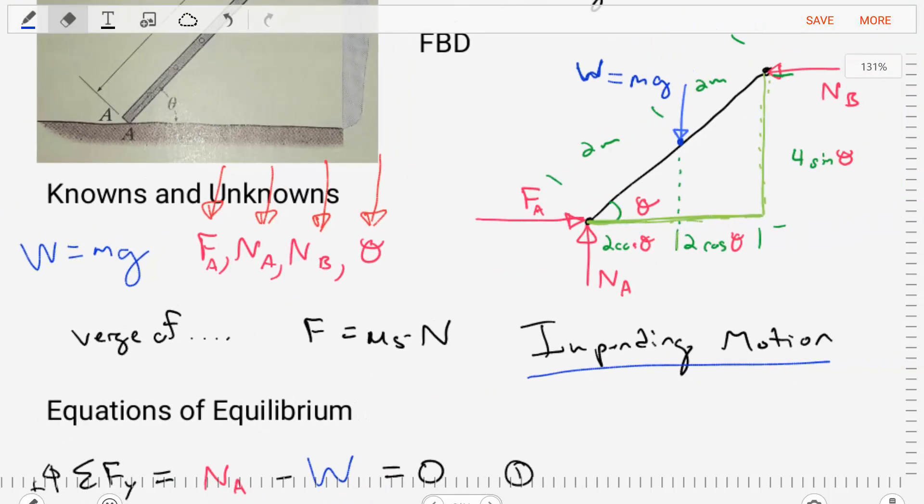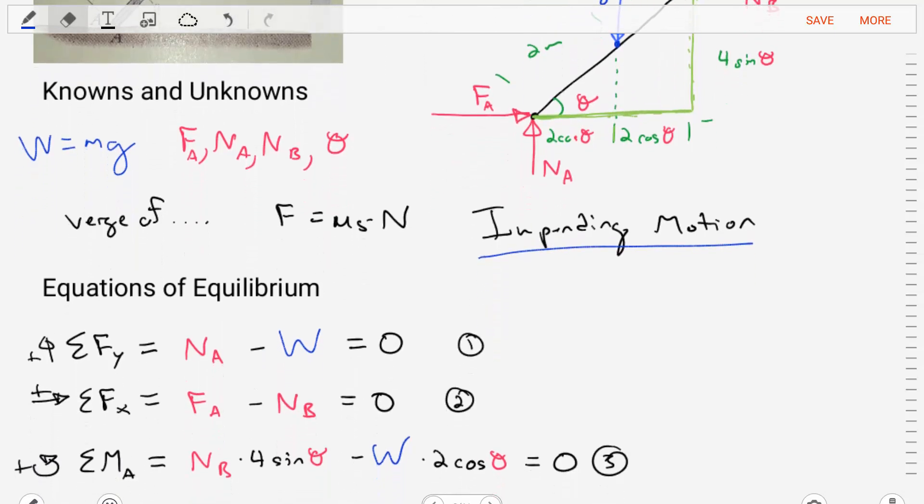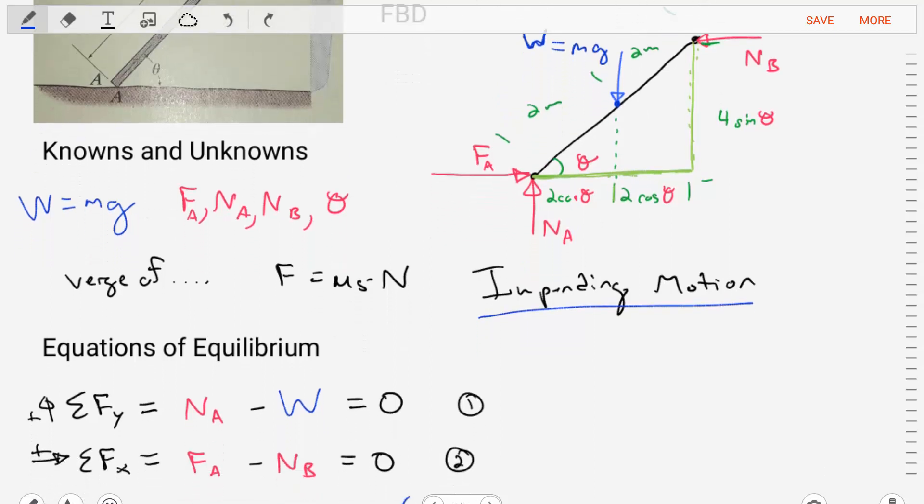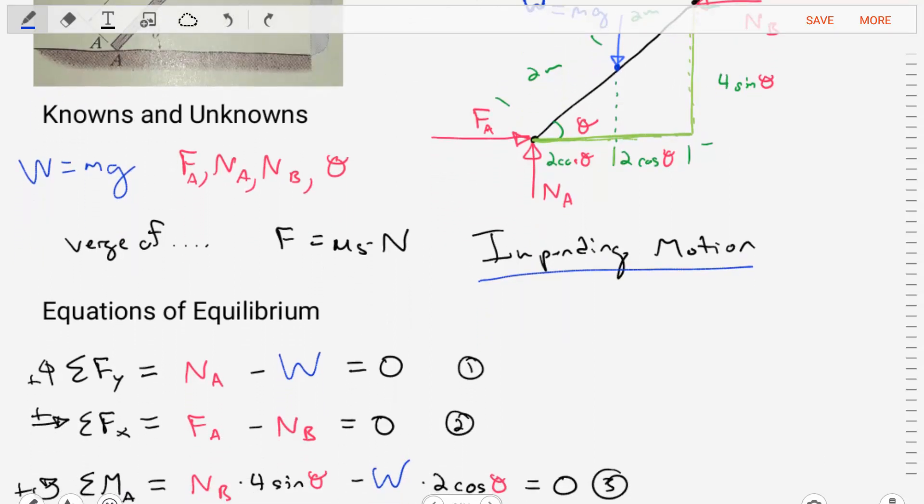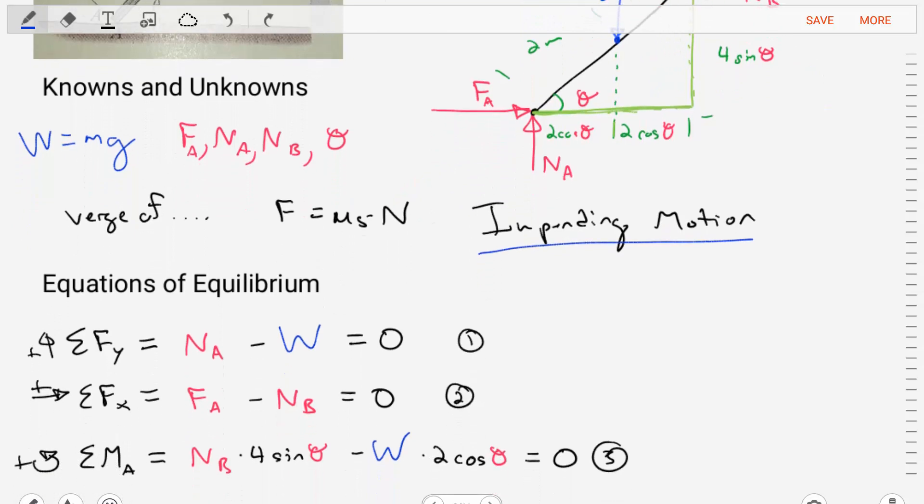So now that we've got this problem set up, let's do what we always do. Let's build out our equations of equilibrium. Let's sum the forces in the y direction. We'll find that those forces are equal to N A minus the weight, which is mass times gravity, equal to zero. Let's sum the forces in the x direction. We'll find that it is equal to the frictional force F A minus the normal force B. So F A minus normal force B.